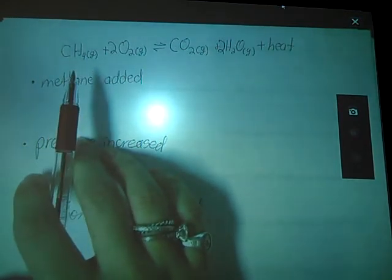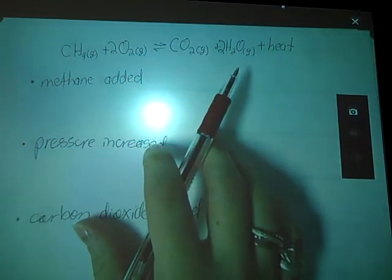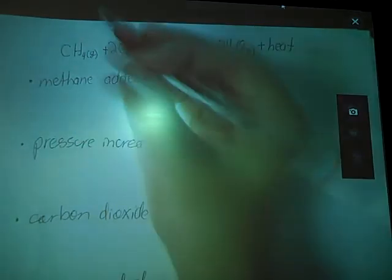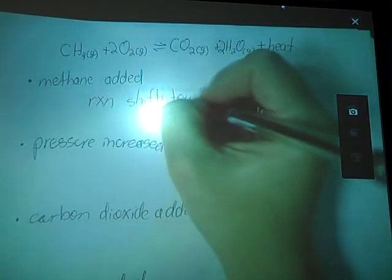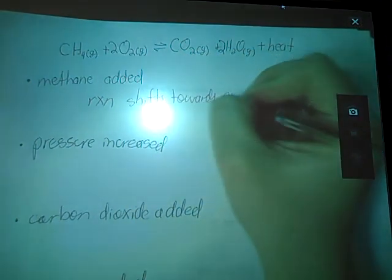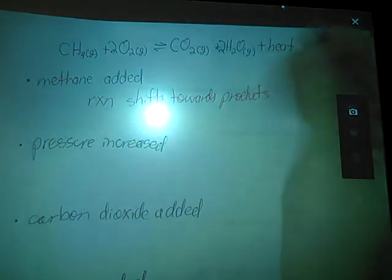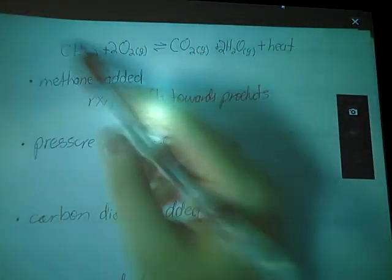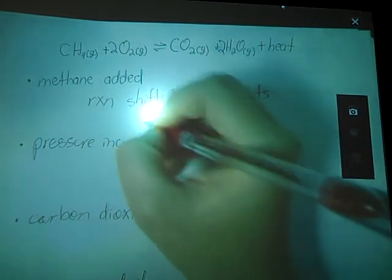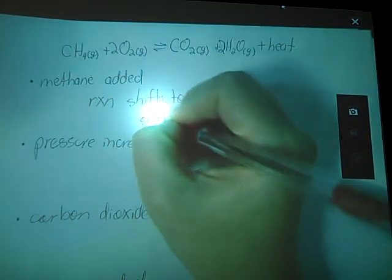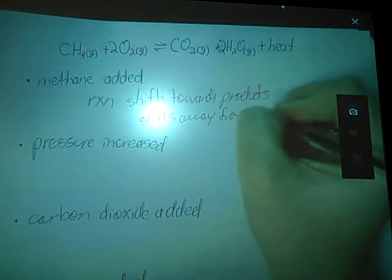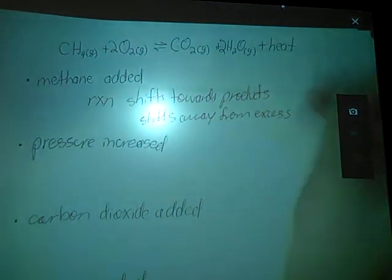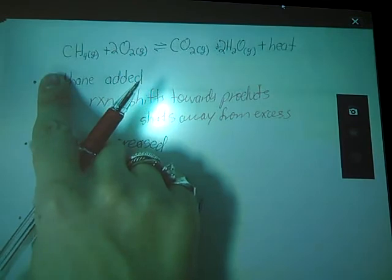If I add methane, we're going to shift away from the excess towards the right. So my reaction shifts towards products. Why, you might ask? Excess reactant. So it's going to shift away from excess, to use up that excess reactant we have put in.